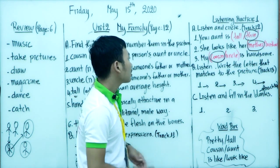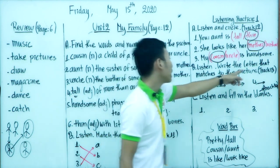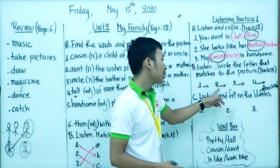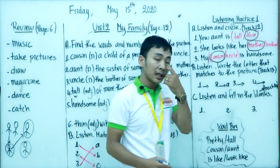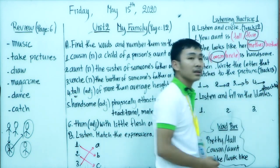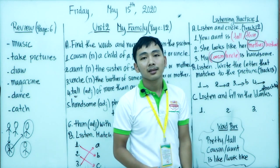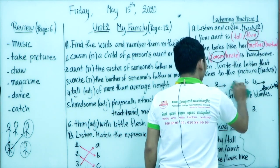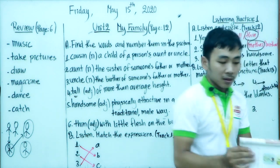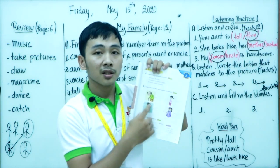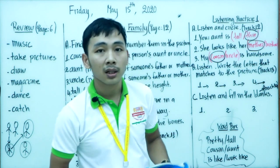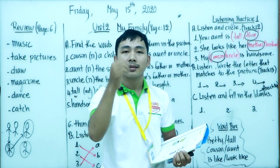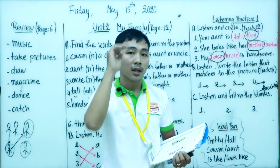Now let's move to Section B: listen and write the letter that matches the picture. When you hear the description matching picture number 2, put letter A; picture number 3, put letter B; then letter C, then letter D. Look at the pictures in your book and put the letters in order. Are you ready? Listen carefully to the track.